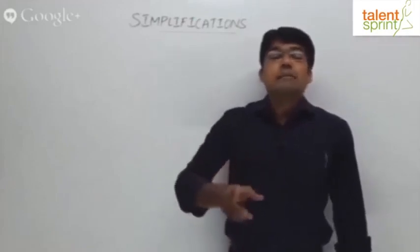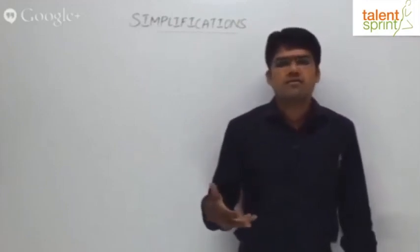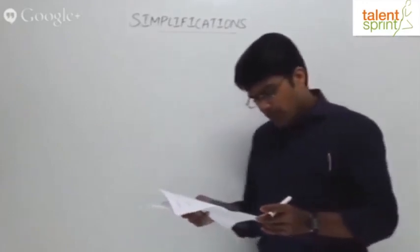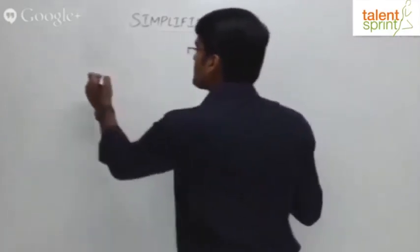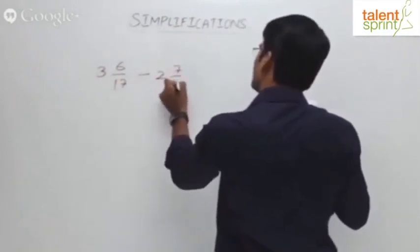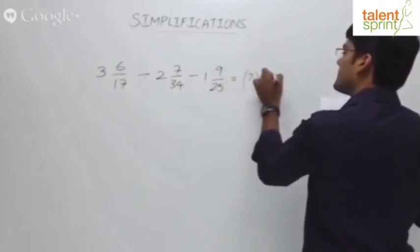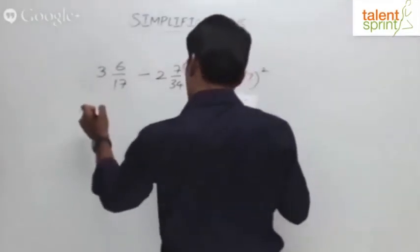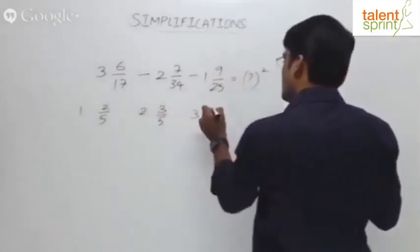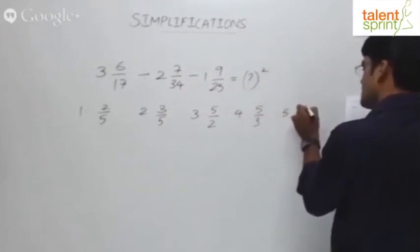Let us now look at a question where multiplications and divisions of fractions are involved. This is generally considered a complicated one — students often go wrong here. For example: 3 and 6/17 divided by 2 and 7/34, minus 1 and 9/25, equals question mark squared. The options are: 2/5, 3/5, 5/2, 5/3, and 4/7.